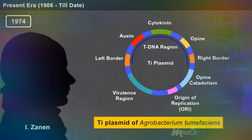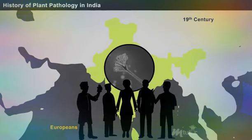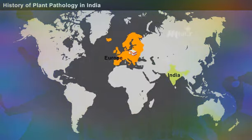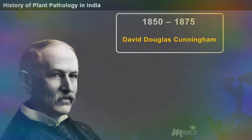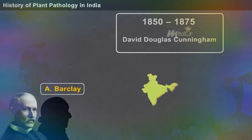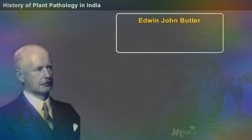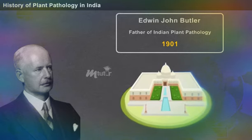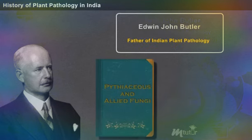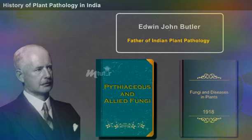Let us now discuss the history of plant pathology in India. The study of fungi in India was initiated by Europeans in the 19th century; Indians collected fungi specimens and sent them for identification to laboratories in Europe. During 1850–1875, David Douglas Cunningham and A. Barclay initiated the identification of fungi in India, making a special study on rusts and smuts. Edwin John Butler, known as the father of Indian plant pathology, initiated an exhaustive study on fungal diseases in 1901 at the Imperial Agricultural Research Institute at Pusa, Bihar. He wrote a classic textbook named Fungi and Disease in Plants in 1918.